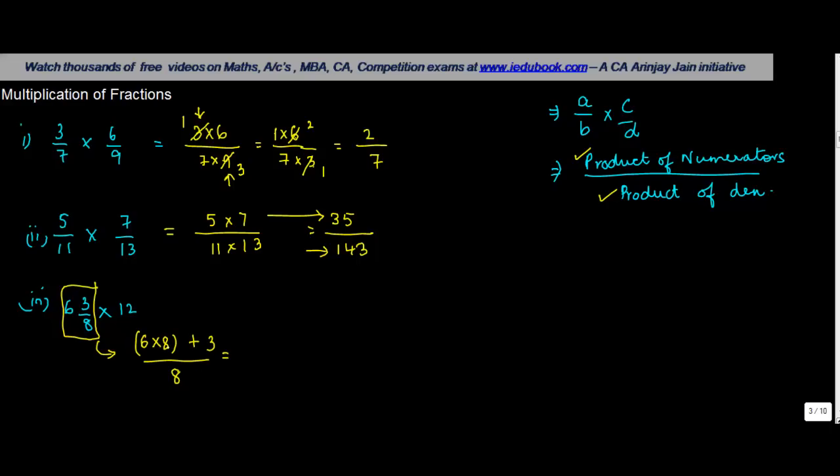So 6 into 8 gives you 48 plus 3, 51 divided by 8. So now this one will become 51 divided by 8 into 12. You can write this as 12 by 1. What will be the product? 51 into 12 divided by 8 into 1.